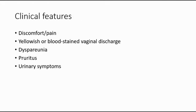The clinical features of atrophic vaginitis are discomfort or pain in the genital area, vaginal discharge which is yellow in color or blood-stained, dyspareunia which means painful sexual intercourse due to the inflammation, pruritus which means itchiness in the vagina, and also urinary symptoms.